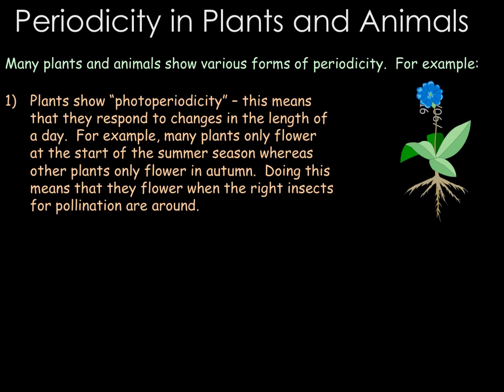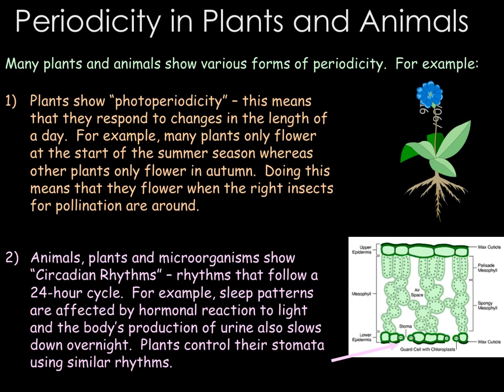We also have circadian rhythms, which are biological processes that follow a 24-hour cycle. For example, our sleeping patterns are affected by a hormonal reaction to light — the hormone melatonin makes you sleepy. When it gets dark, you produce more melatonin, making you sleepy, and when it gets lighter, melatonin levels drop down. Having regular sleeping patterns is very good for your health and helps you feel awake at the right times. Obviously the opposite to this would happen in nocturnal animals.